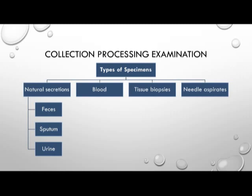Specimens collected for processing in a clinical parasitology lab include natural secretions such as feces, sputum, or urine — the type of parasite suspected determines the appropriate specimen. Other parasites infect the blood, such as malaria caused by the Plasmodium genus. Tissue biopsies and needle aspirates can also be collected for certain parasitic infections.